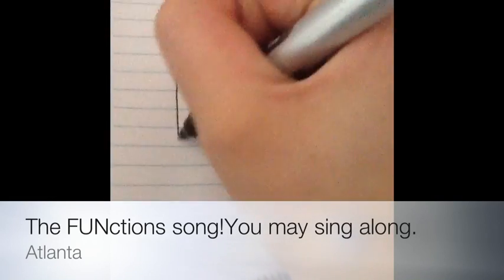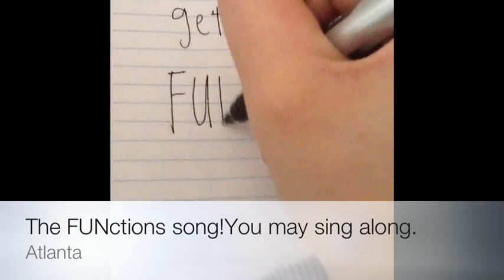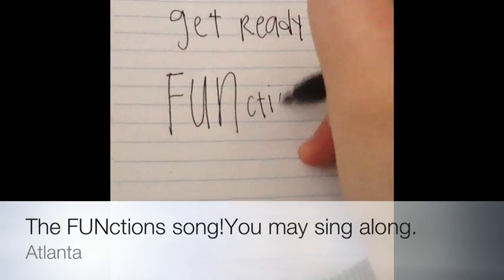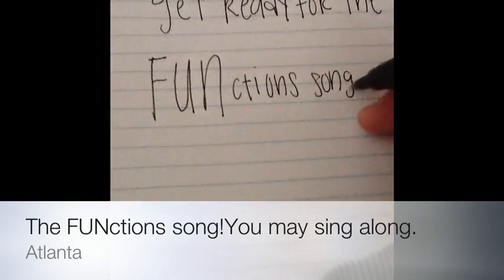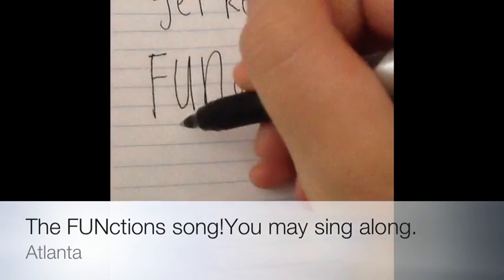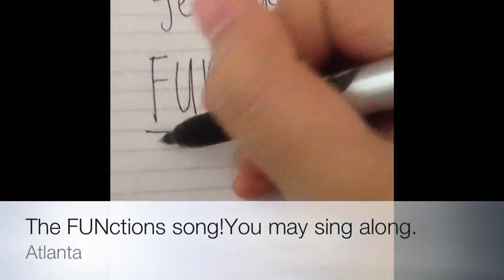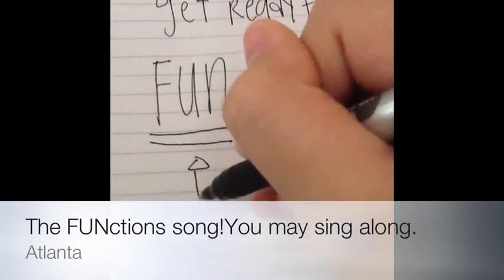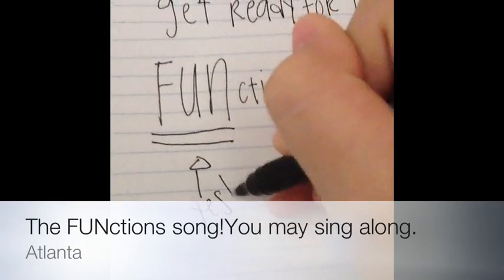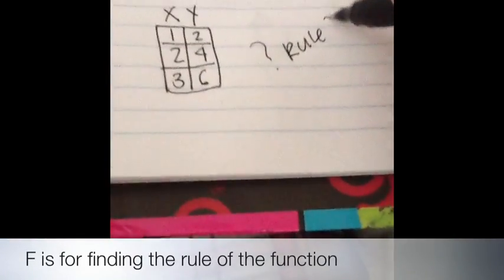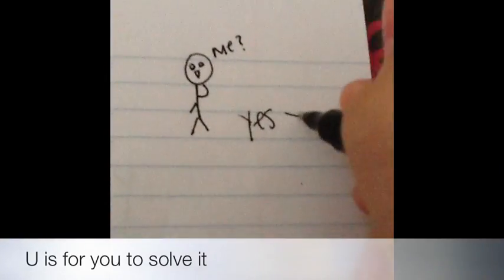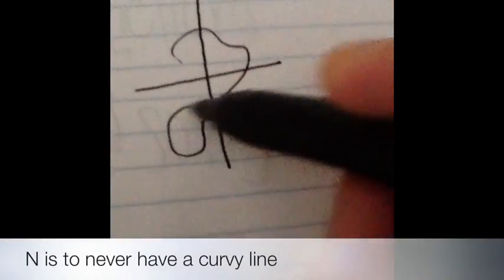Thank you. F is for finding the rule of the function, U is for you to solve it, N is to never have a curvy line down in the function world.